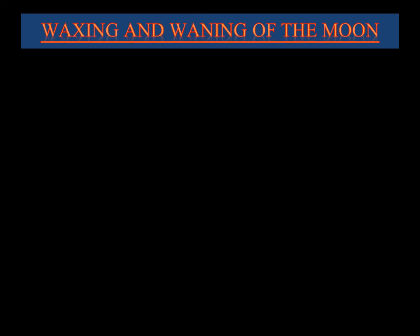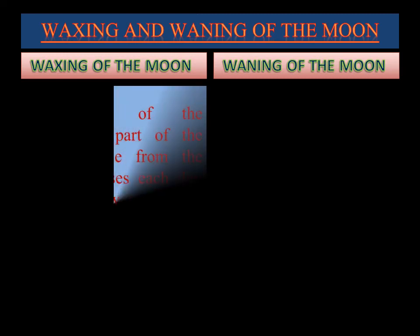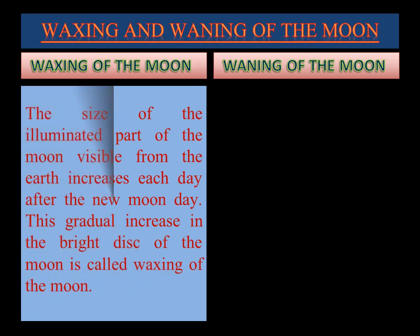Now we will discuss about waxing and waning of the moon. In our first module, we learned about the different phases of the moon. You understood that the size of the illuminated part of the moon changes every day. The size of the illuminated part of the moon visible from the earth increases each day after the new moon day. This gradual increase in the bright disk of the moon is called waxing of the moon. Waxing of the moon happens from new moon day to the full moon day.